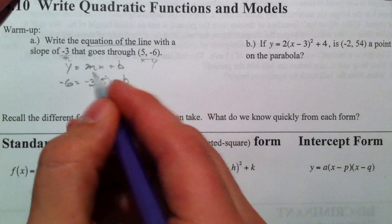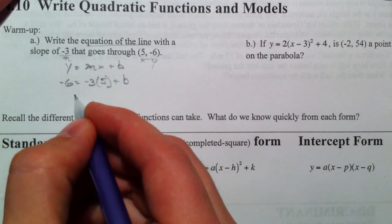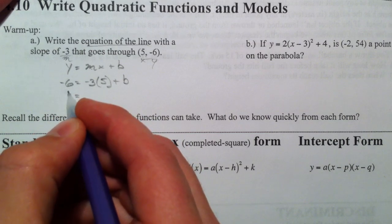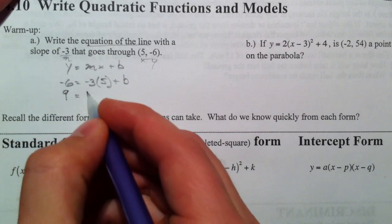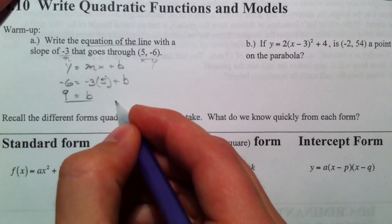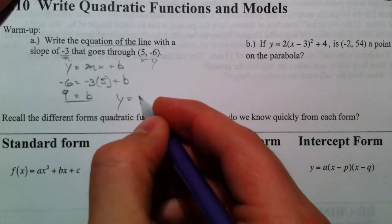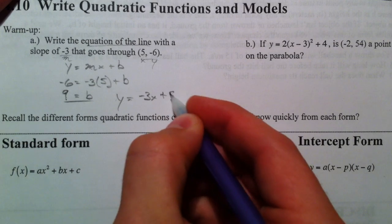But since we don't know our b, our slope and our y-intercept, we would solve for it. So we add our 15 over, 15 minus 6 is 9, so your b is 9. Your equation is y equals negative 3x plus 9.